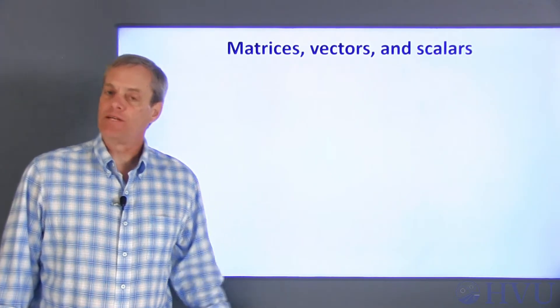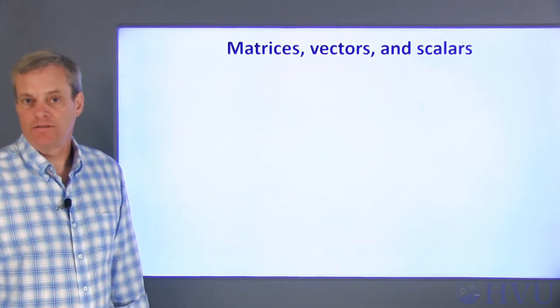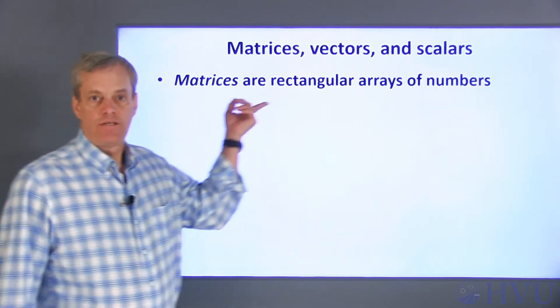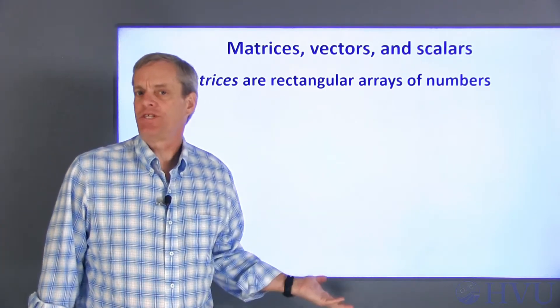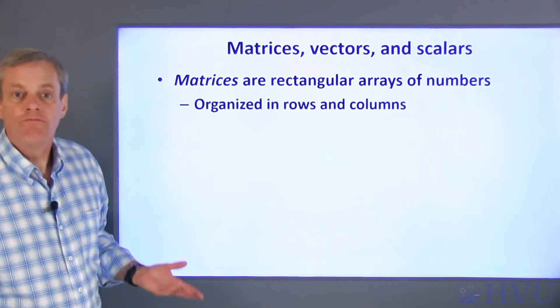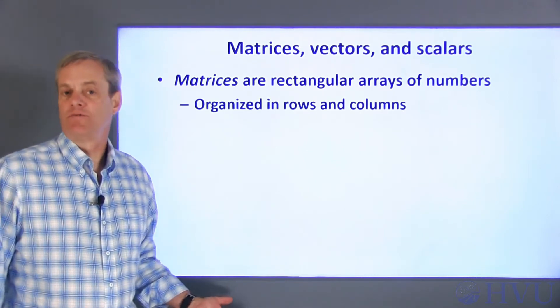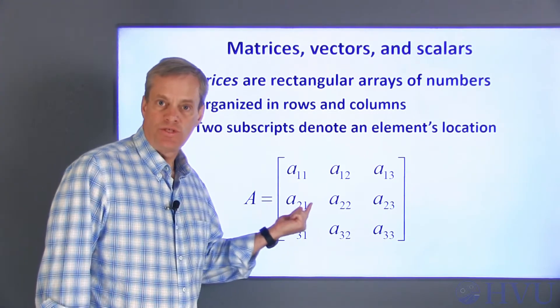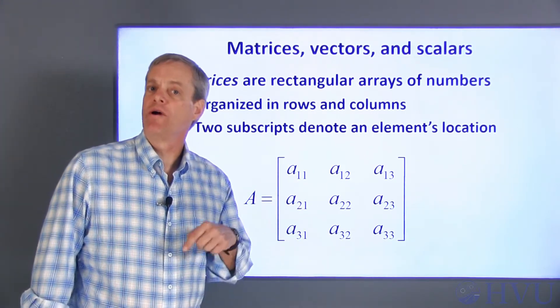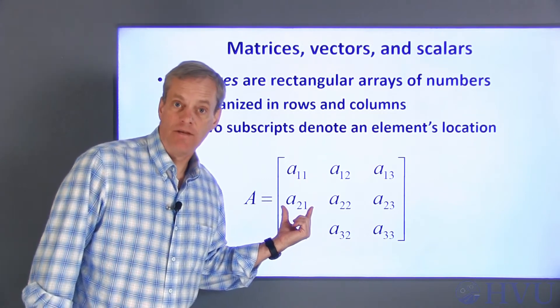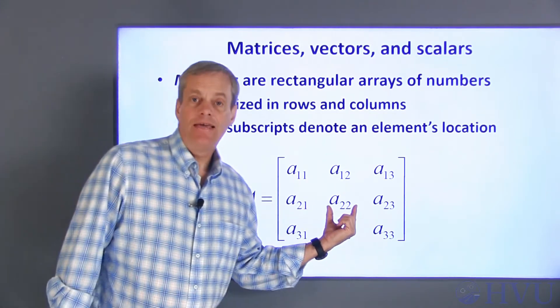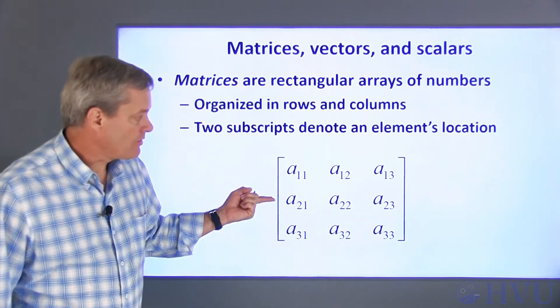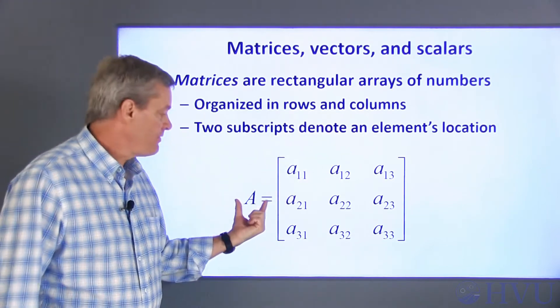Linear Algebra operates on matrices, vectors, and scalars. Matrices are two-dimensional arrays, which are just tables of numbers. The values in a matrix are organized in rows and columns. Elements in an array are specified by two subscripts, which give the row and column location of the element. For example, A22 is the element in the second row and column of the matrix A.